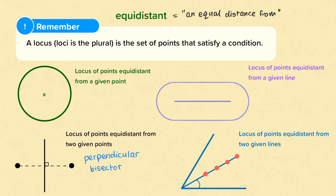This collection of points makes a straight line here, and that cuts the angle between my two given lines in half. So if I wanted to construct this line, I'd be constructing an angle bisector.